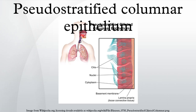A pseudostratified epithelium is a type of epithelium that, though comprising only a single layer of cells, has its cell nuclei positioned in a manner suggestive of stratified epithelia. As it rarely occurs as squamous or cuboidal epithelia, it is usually considered synonymous with the term pseudostratified columnar epithelium.